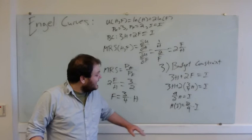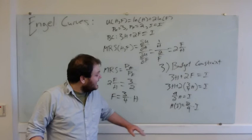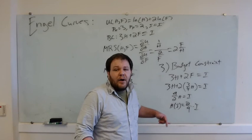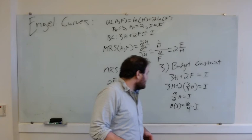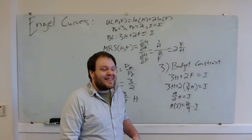So, this is our Engel curve. This tells us if you give me an income, I'll give you an amount of housing you'll consume. If you had 1,200 dollars a month, we would consume 2 ninths of 1,200 dollars. Let's say we had 900 dollars a month, and we would have a 200 square foot apartment. If we had 1,800 dollars a month, we would have a 400 square foot apartment.